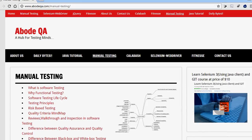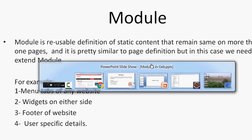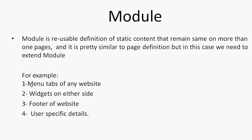Let's see how we normally create a module class. Examples include menu tabs of any website because they normally remain the same, widgets on either side of pages, footers of websites which are also pretty static, and possibly some user-specific detail that is also not changing on any page. These are a few examples to take into consideration.